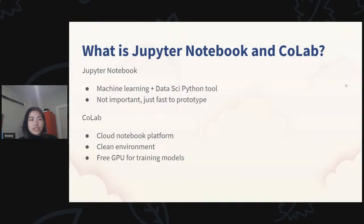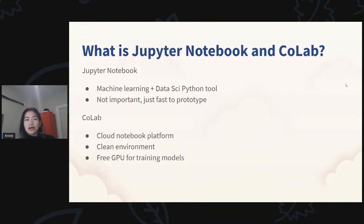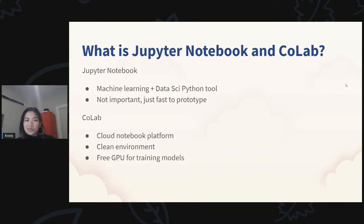We're going to go through a quick demo. You don't need Python or Jupyter Notebook knowledge, but just a quick explainer: Jupyter Notebook is a machine learning and data science Python tool that helps you quickly prototype and run Python code. I'll be using it in Colab, which is basically the cloud version of Jupyter Notebook. It gives you a free and clean environment — a lifesaver if your Python packages are all messed up. Colab also gives you free GPU time if you ever want to train models for fun, though we will not be doing that today.